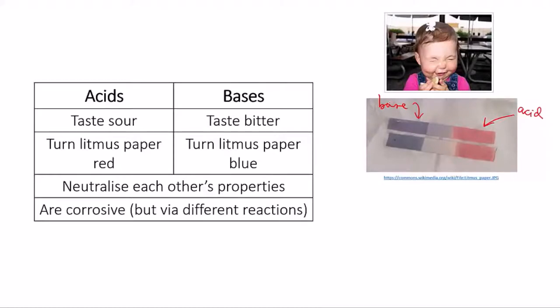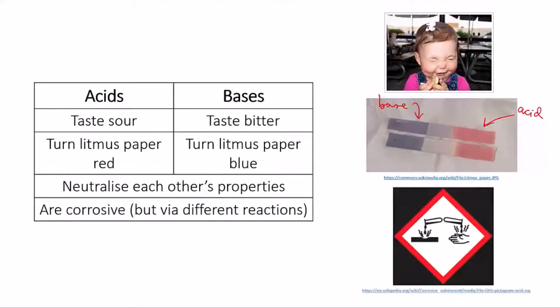Acids and bases neutralize each other. In general, if you add an acid to a base, then the products will be neither acidic nor basic. There are exceptions to this that we'll look at in year 12 when we talk in more depth about acids and the idea of chemical equilibrium. Both acids and bases can be corrosive if they're concentrated enough, but the chemical reactions that they undergo that do the corroding are actually different. We're going to look at some of the characteristic reactions of acids later.